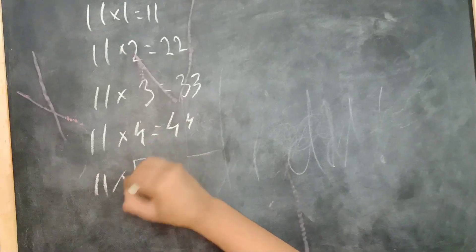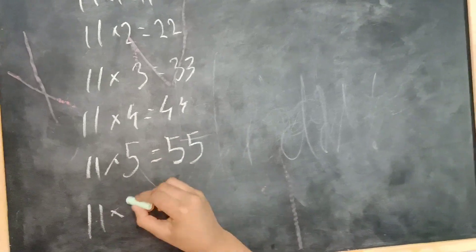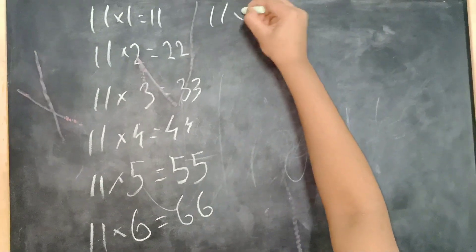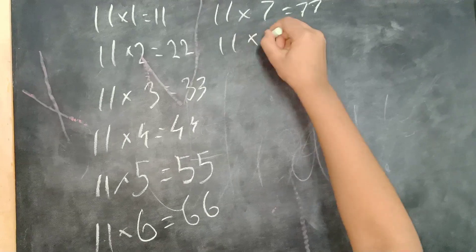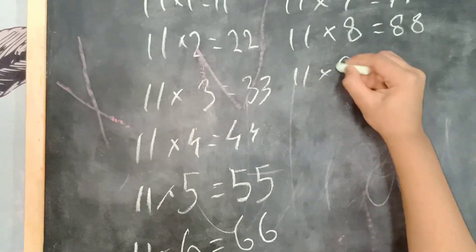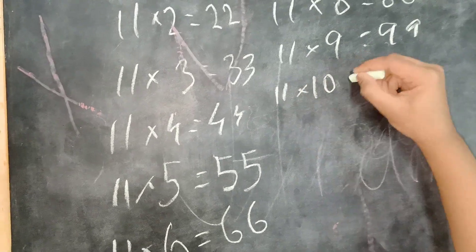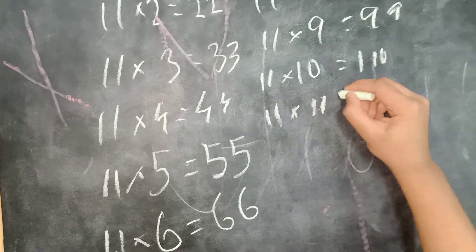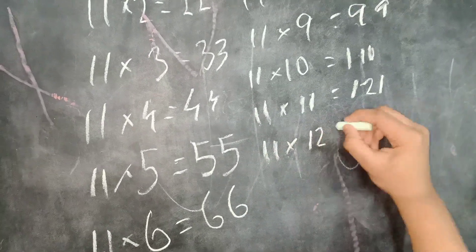11 times 5 equals 55, 11 times 6 equals 66, 11 times 7 equals 77, 11 times 8 equals 88, 11 times 9 equals 99, 11 times 10 equals 110, 11 times 11 equals 121, 11 times 12 equals 132.